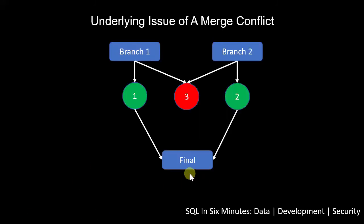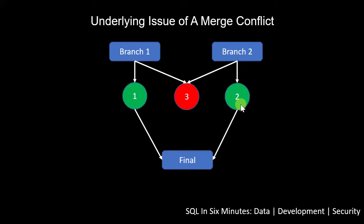Another way to look at this: say we have a final branch, and we have branch 1 and branch 2. In branch 1, we edit object 1 and object 3. In branch 2, we edit object 3 and object 2. Notice that both branch 1 and branch 2 changed object 3. So when we merge, which one are we going to take? There won't be an issue with object 1 or object 2, because branch 2 changed object 2 and branch 1 changed object 1 — they didn't both change those. Objects 1 and 2 will merge without issues, but object 3 will conflict because both branches edited it, assuming those are different changes.